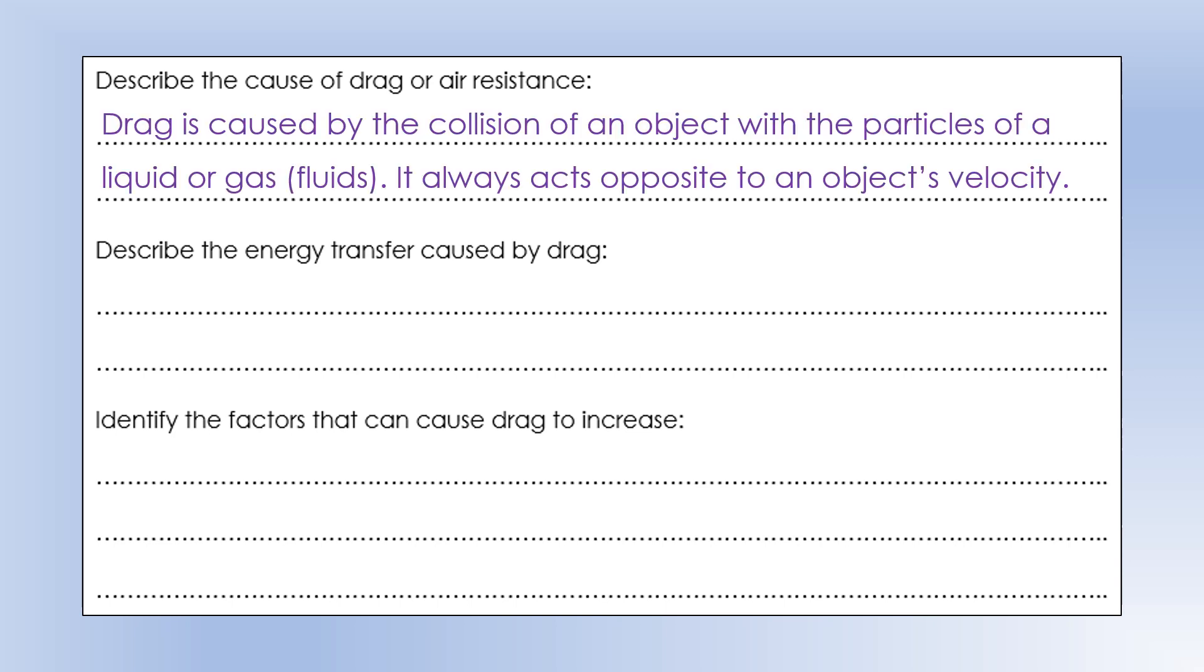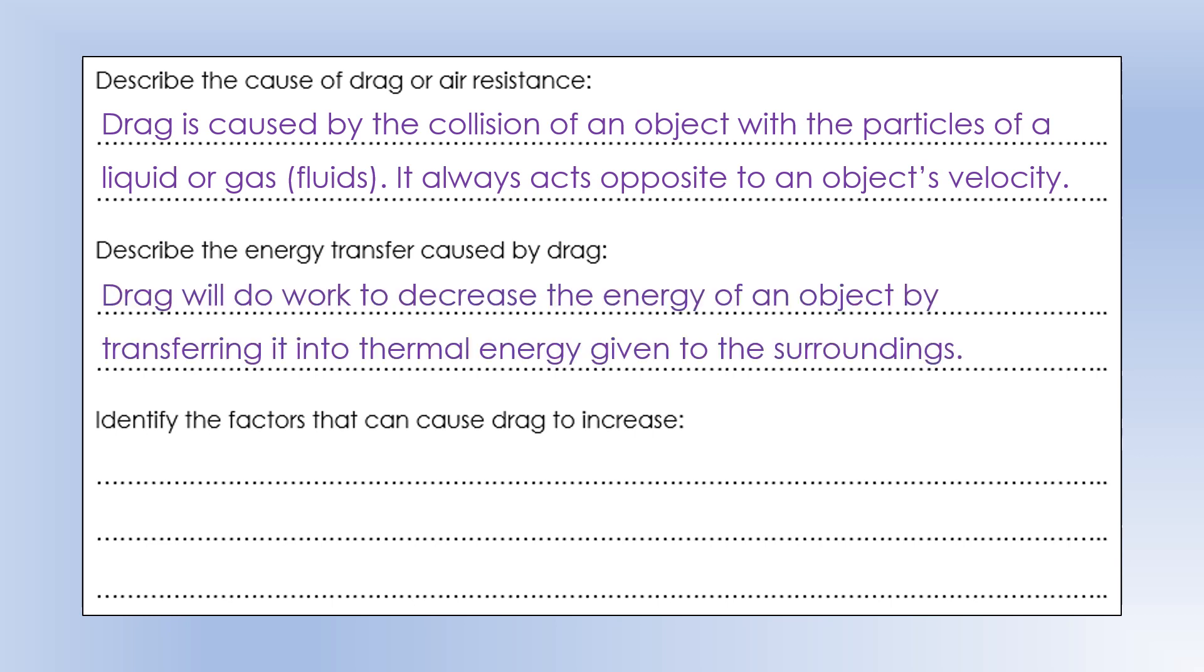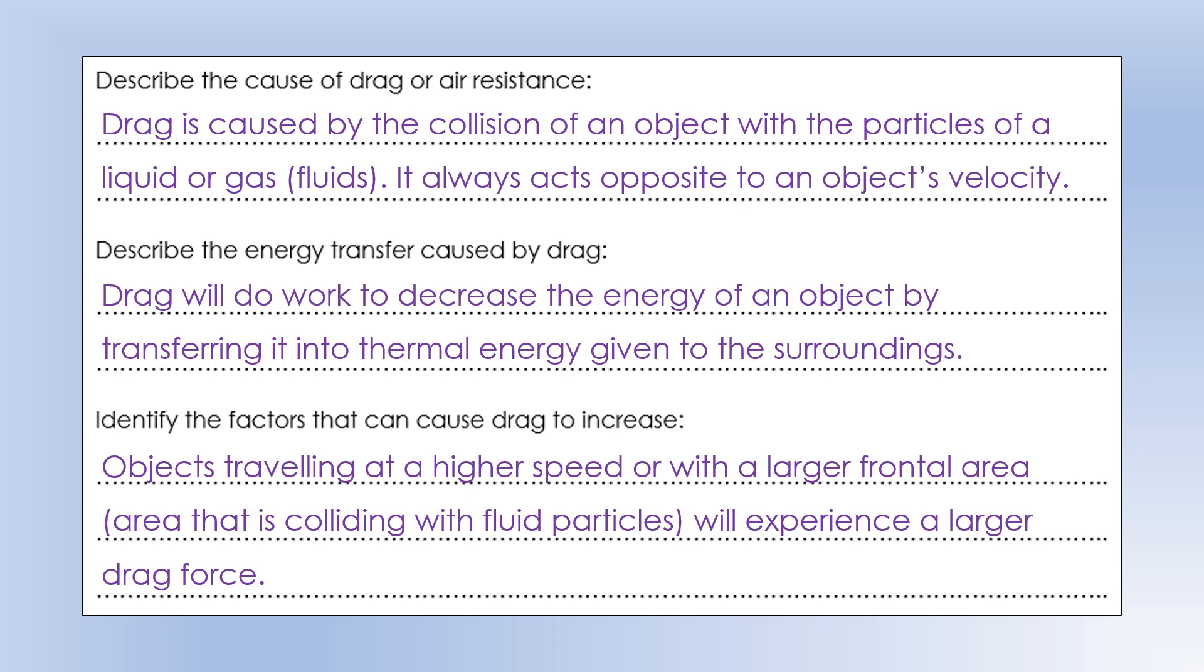Drag, or air resistance as you might know it, is caused by the collision of an object with particles of a liquid or gas, which are lumped together and called fluids. It always acts in the opposite direction to an object's velocity. Drag will do work to decrease the energy in an object, and it will transfer it into thermal energy to the surroundings. The surroundings get hot, or the air particles surrounding the object will have more kinetic energy. Drag is a variable force. If you travel at higher speed, there will be a larger drag force, because you're colliding with more fluid particles every second. And if you have a larger frontal area, that will give you a higher drag force as well.